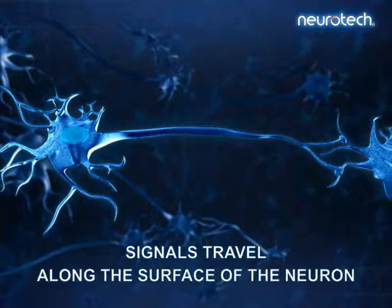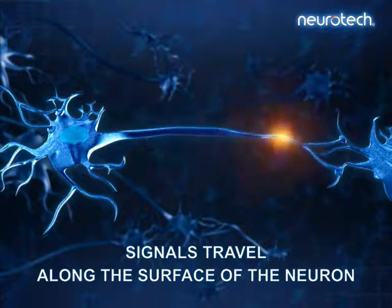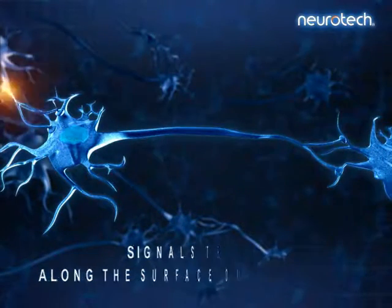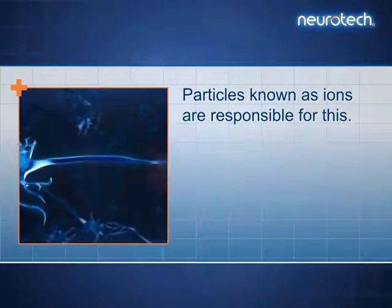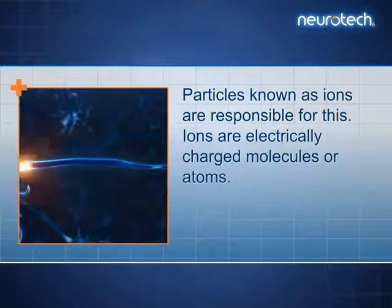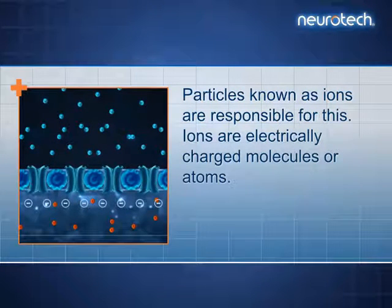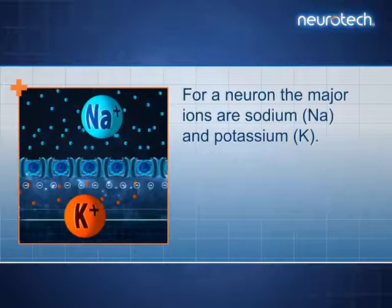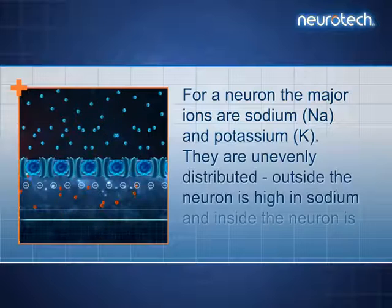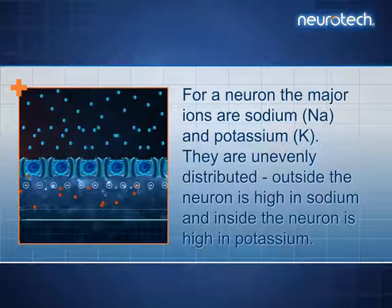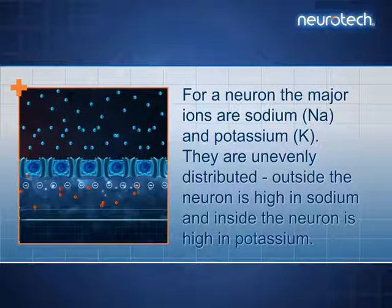Signals travel along the surface of the neuron. Particles known as ions are responsible for this. Ions are electrically charged molecules or atoms. For a neuron, the major ions are sodium, Na, and potassium, K. They are unevenly distributed: outside the neuron is high in sodium, and inside the neuron is high in potassium.